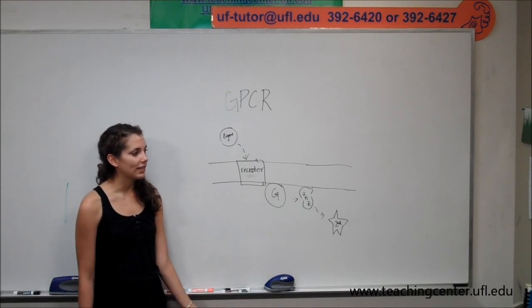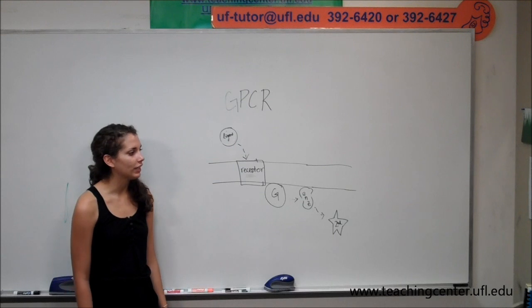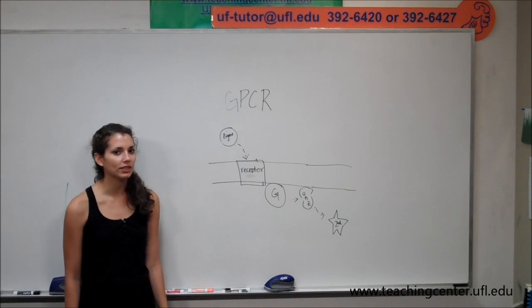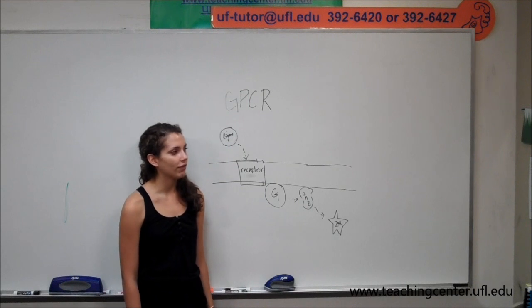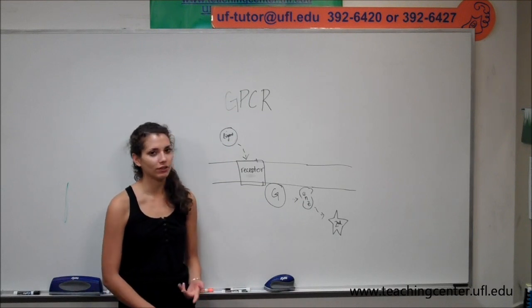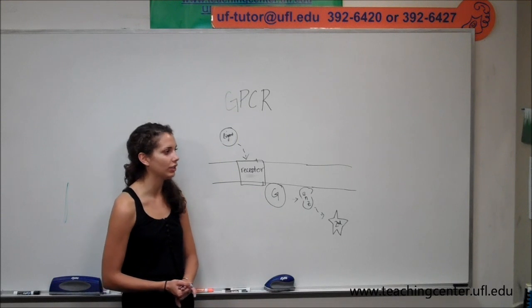Cyclic GMP is another common second messenger and structurally similar to cyclic AMP. Another common signaling pathway involves inositol triphosphate, diacylglycerol, and calcium as second messengers.